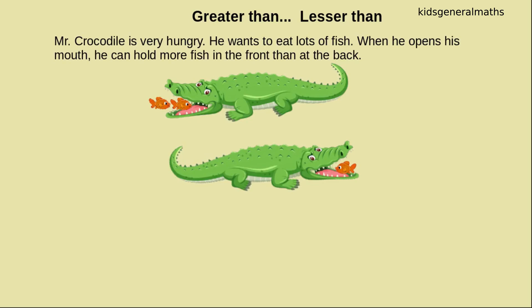Mr. Crocodile is very hungry. He wants to eat lots of fish. When he opens his mouth, he can hold more fishes in the front than at the back. That is, if he eats more fishes in the front, it means greater than. If he eats at the back side, it means lesser than.